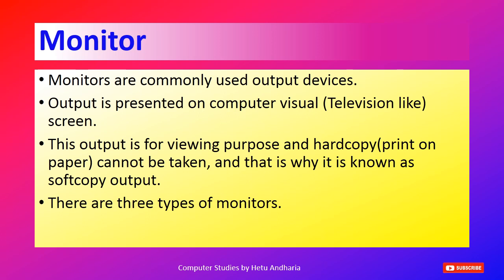First we discuss the monitor — the most common and foremost output device. Output is presented on a computer visual screen, which is a television-like screen. This output is for viewing purposes only and a hard copy print on paper cannot be taken, which is why it is known as soft copy output. There are three types of monitors which I will explain one by one.